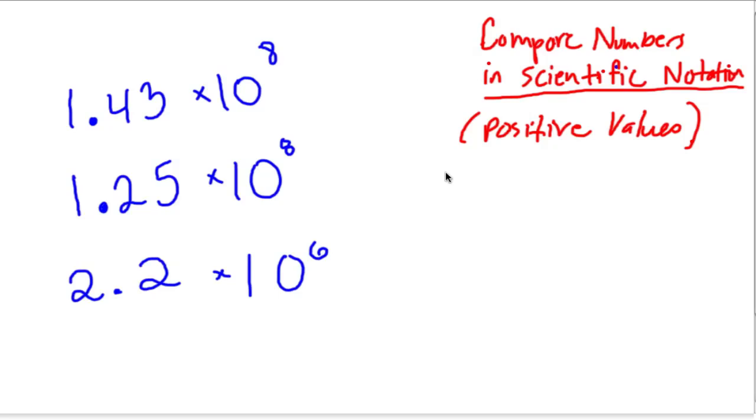So if we have a list of numbers in scientific notation, and they're all positive, which they are here, and the exponents are positive, so everything's positive, positive values, and we have positive exponents. In this scenario, it's fairly easy to compare these numbers.